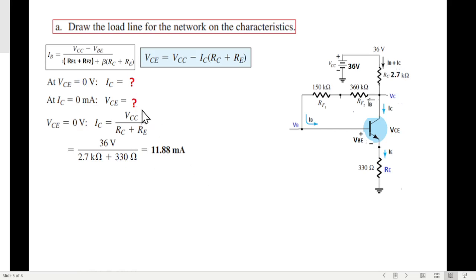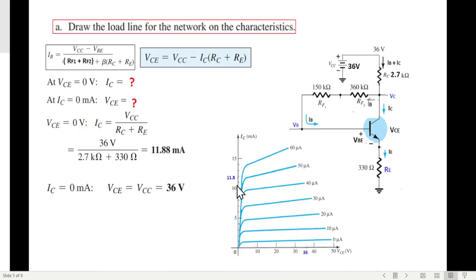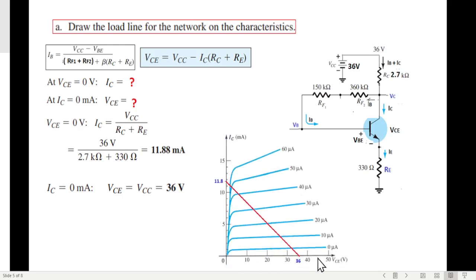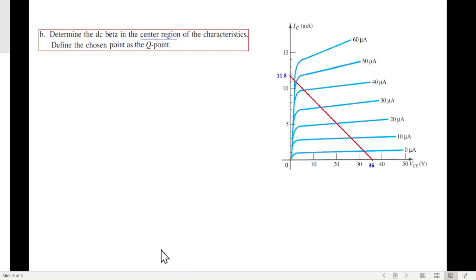So IC we have found. Now VCE: to put IC equal to 0 in this equation, that means this term will become 0, so VCE is equal to VCC, which is 36 volt. And now we can plot the graph. This was the graph. 11.8 is one of the points and 36 volt is the other point, so we'll draw the load line. So this is the first part. The load line has been drawn. Now we go to second question.